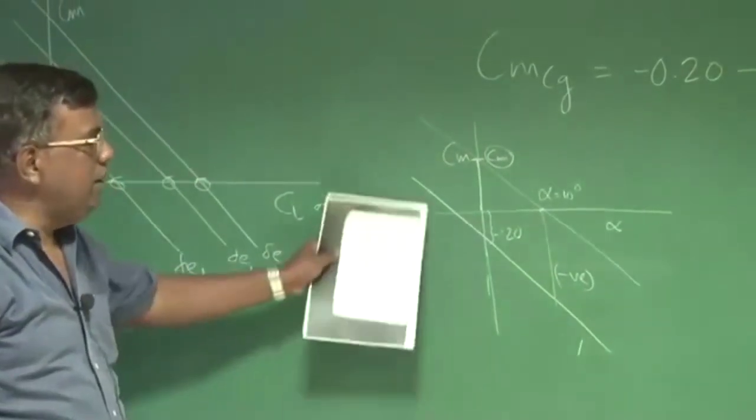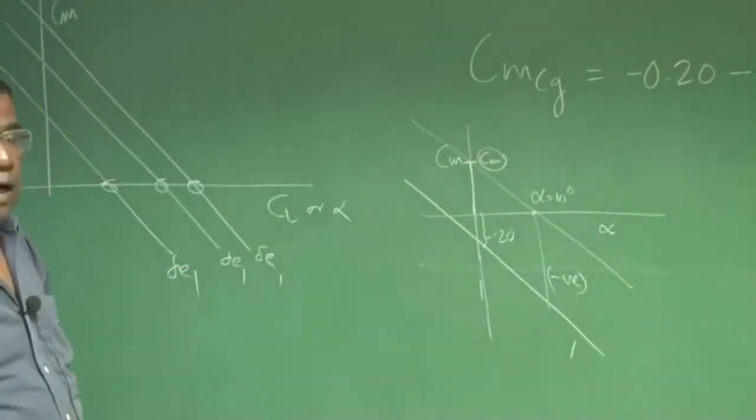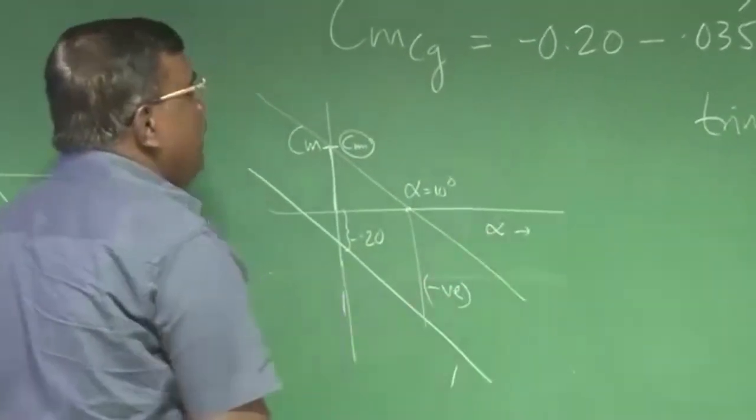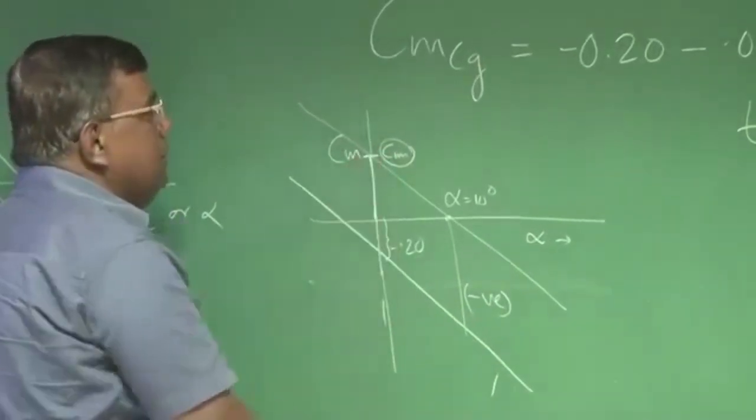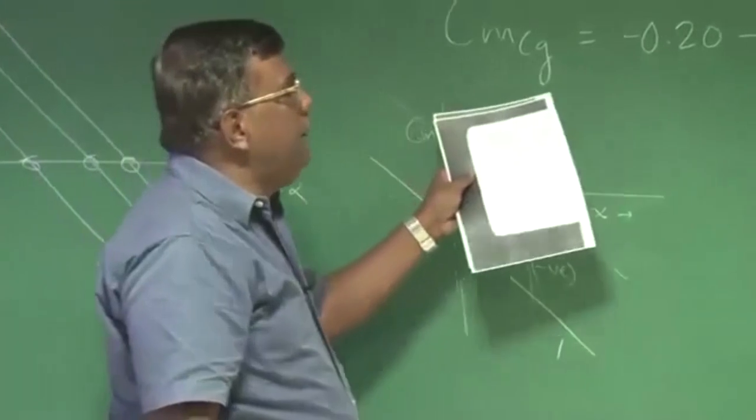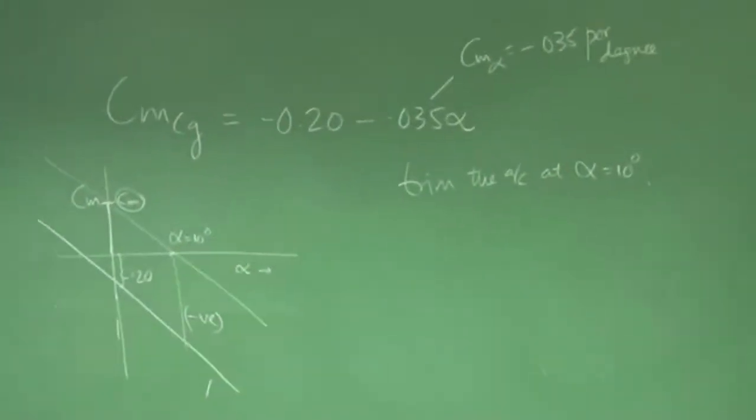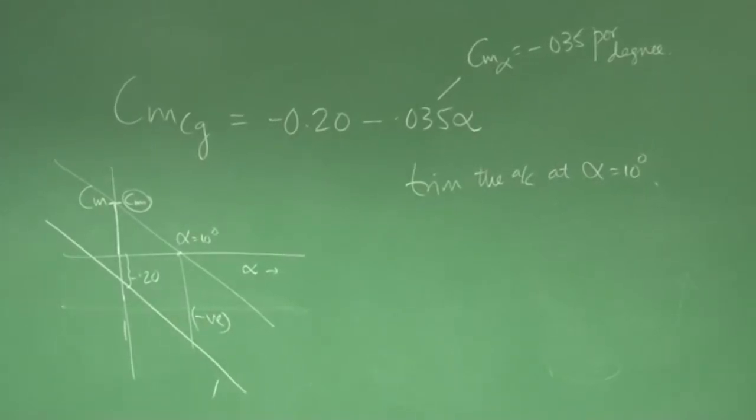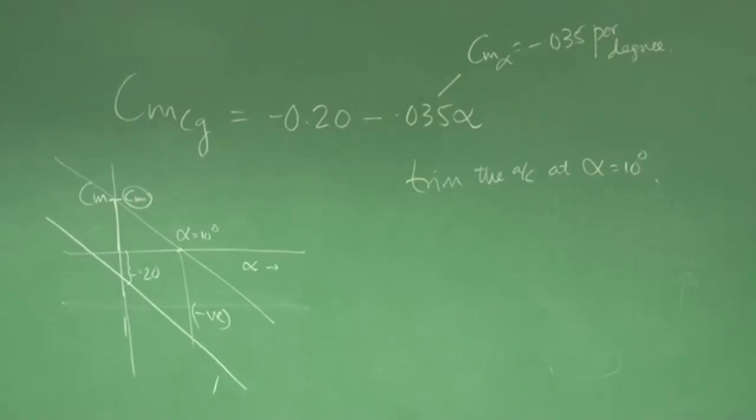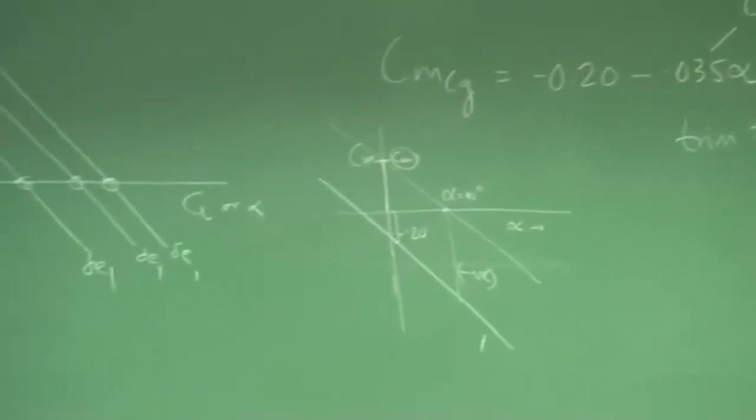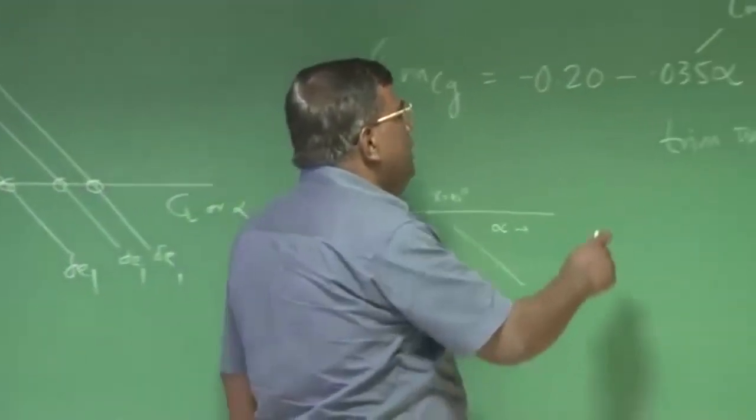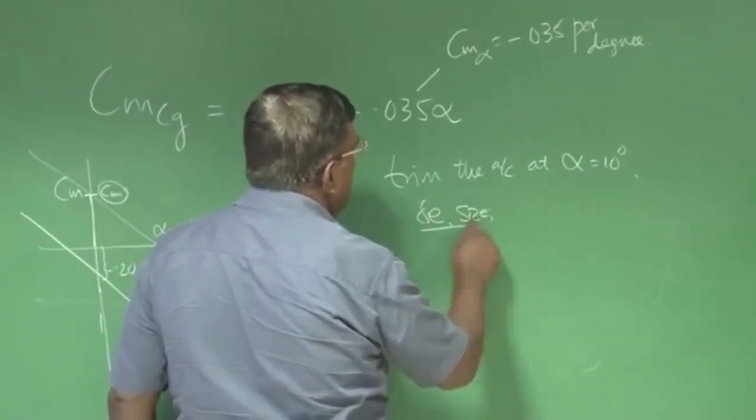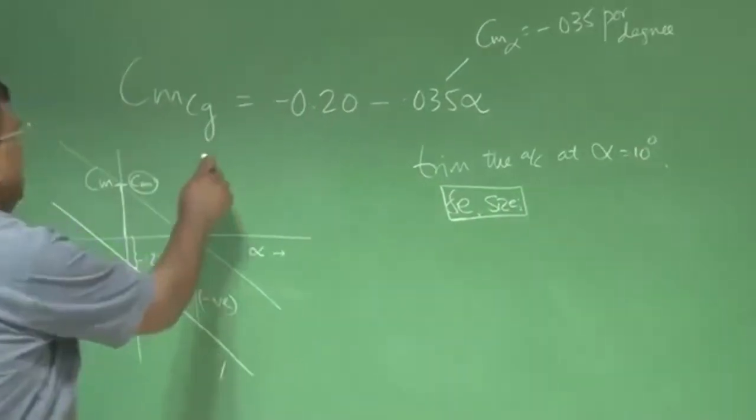Here the CM naught was negative, that is why I cannot trim the airplane at a positive angle of attack. To trim that airplane at a positive angle of attack, I will have to use elevator, because I have to shift this point from here to here. Although if your configuration is like this, this is not a good design. We always try to see that CM naught is positive. It is for an example, it will give you a wider understanding of what is being done. The question here is what is the elevator size so that I can trim this airplane here?